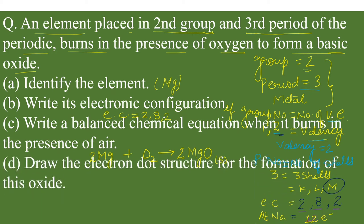One more part, draw the electron dot structure for the formation of this oxide. It means children, this question includes chapter number 1, that is chemical equation. Chapter number 5, identification of element, electronic configuration. And chapter number 3, that is electron dot structure means ionic compounds. Magnesium, to write down electron dot structure, first we need to write elements, that is Mg and O.